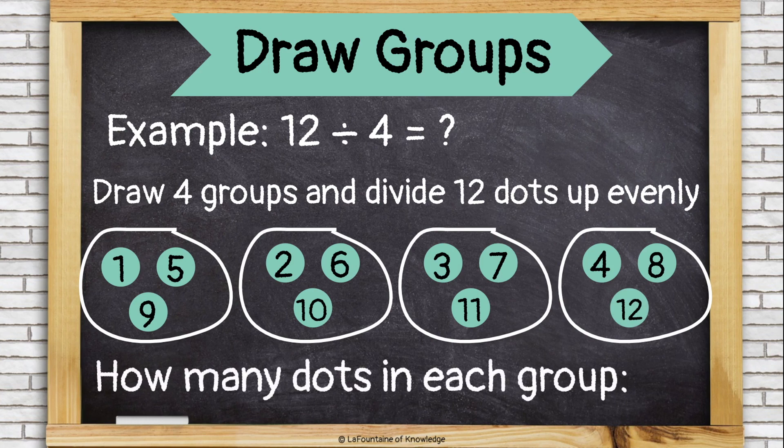Now, how many dots are in each group? That is the answer to my division problem. I only need to look at one of these groups to see that they each have three dots. Twelve divided by four is three.